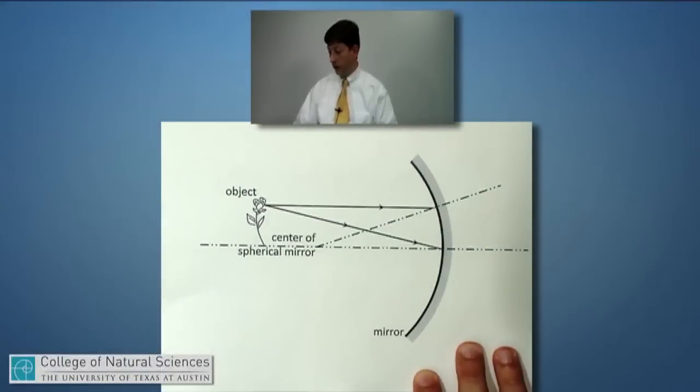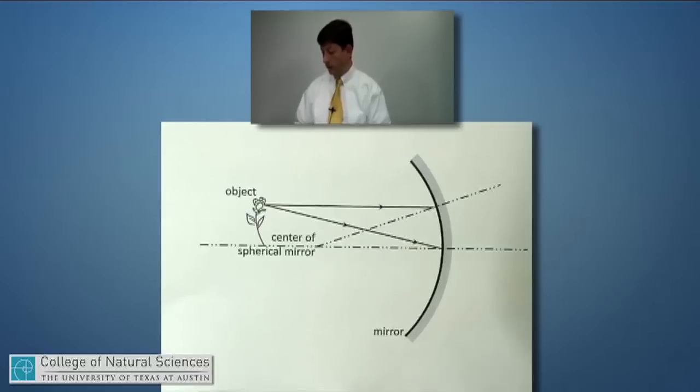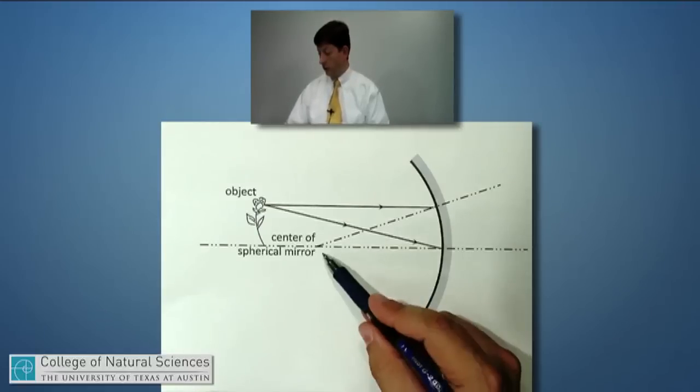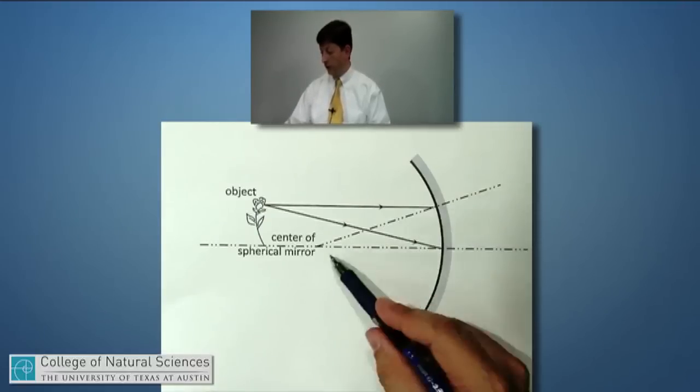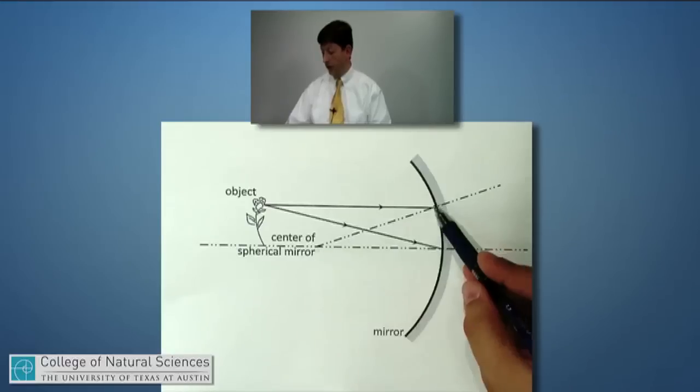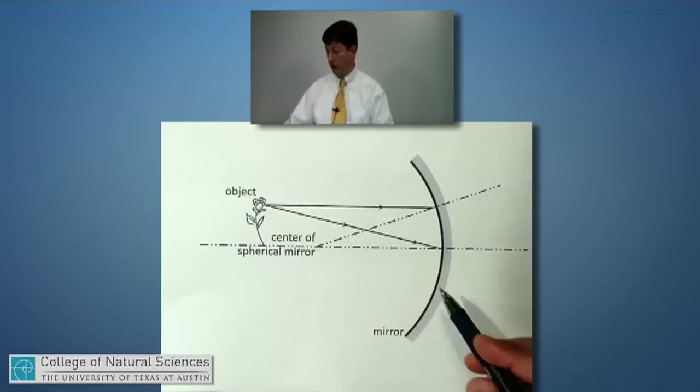Here's another example we can try drawing a picture for. I can draw perpendiculars coming from the center of the spherical mirror out to touch the mirror at various places and draw light rays.